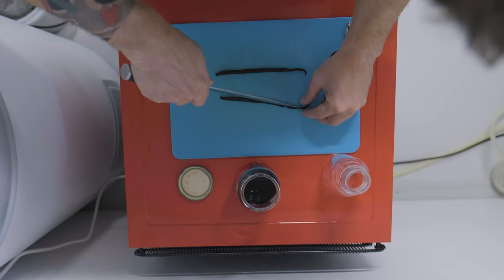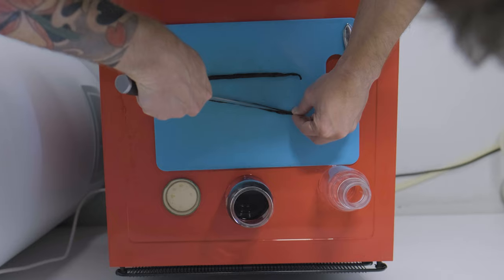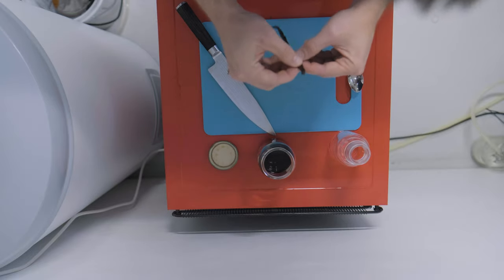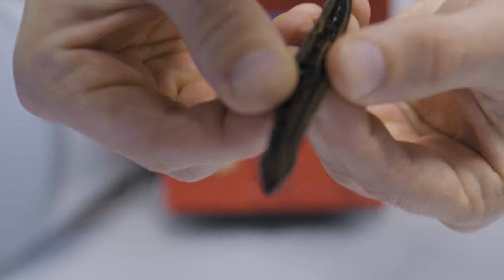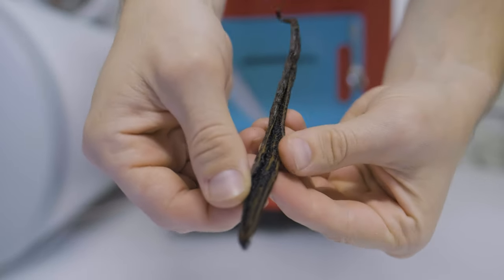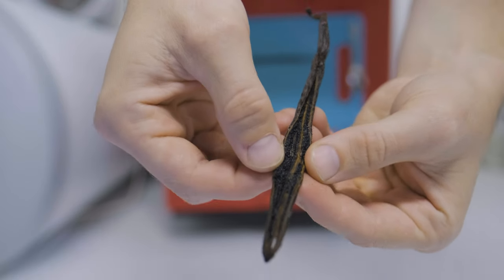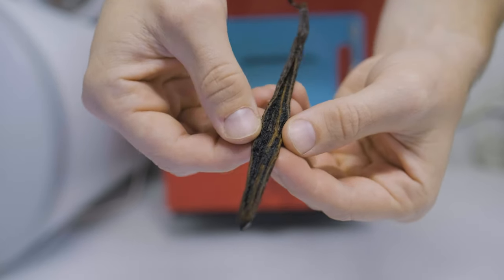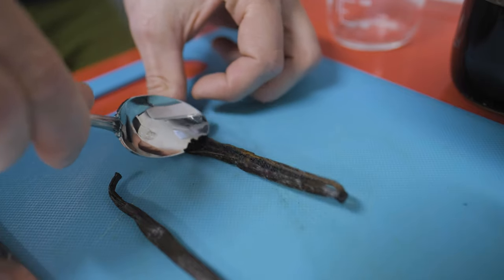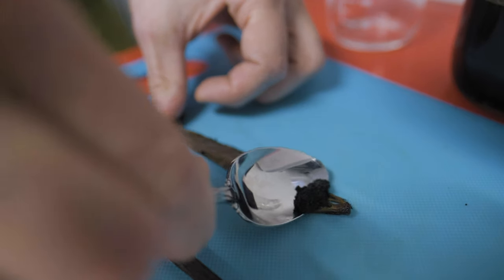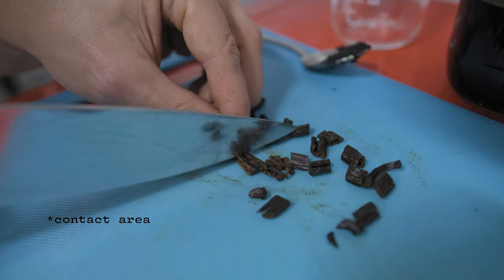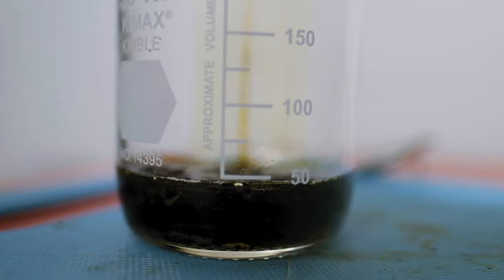So first thing I'm going to do is cut this baby down the middle. You can see here we have all of the delicious goodies. The vanilla caviar as it's called. And I'm going to scrape that out with a spoon and put it inside the jar where my whiskey will go.